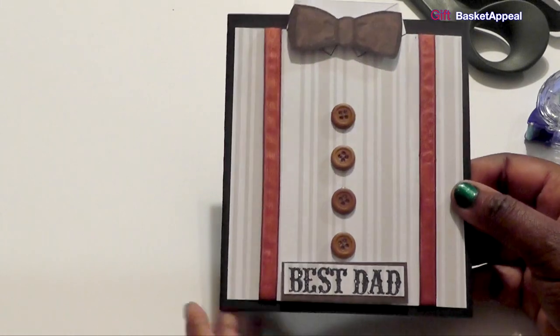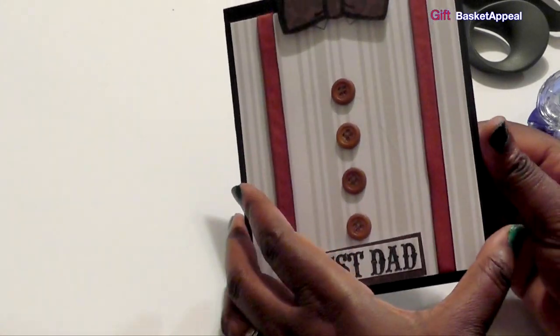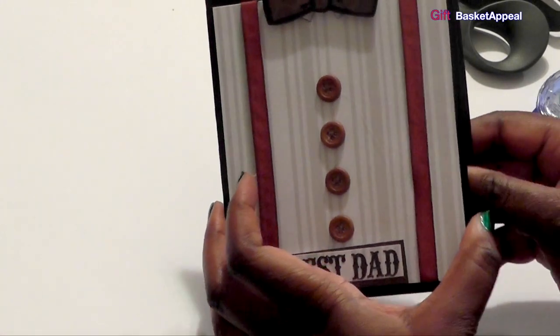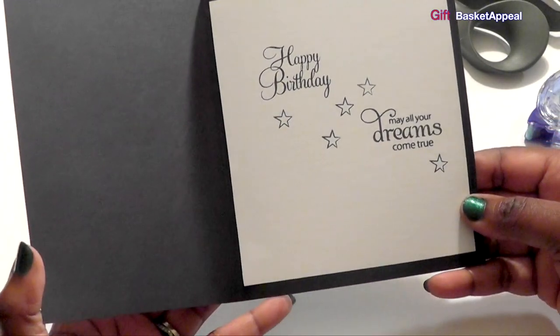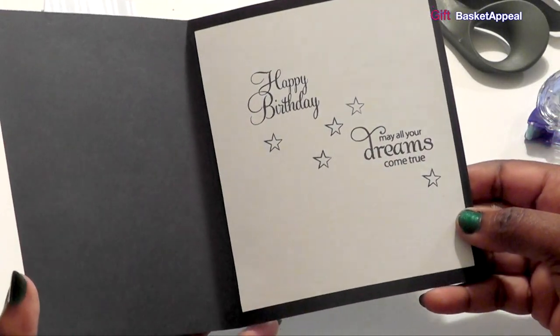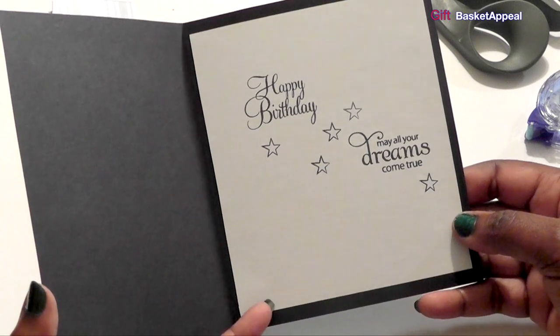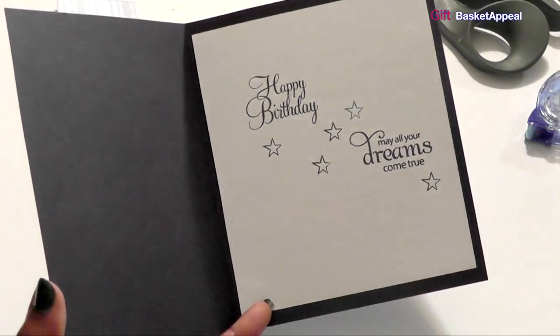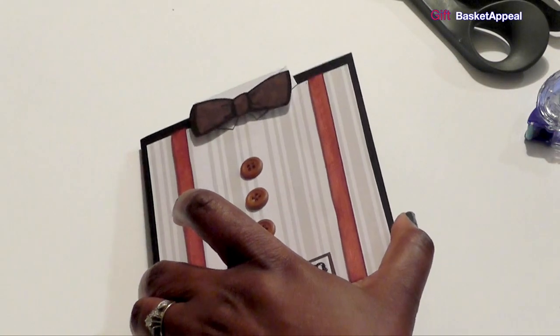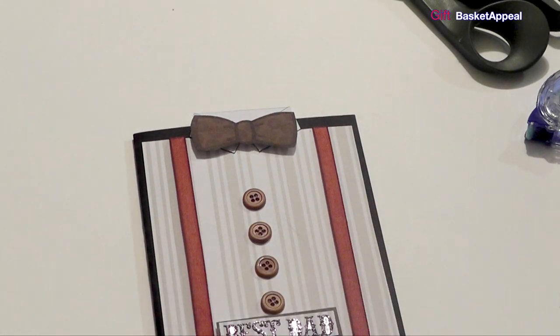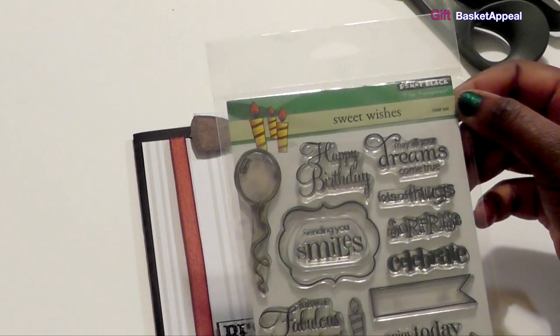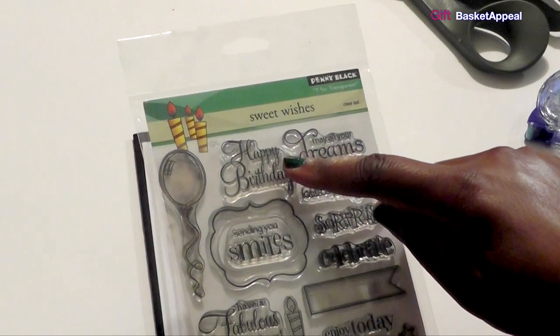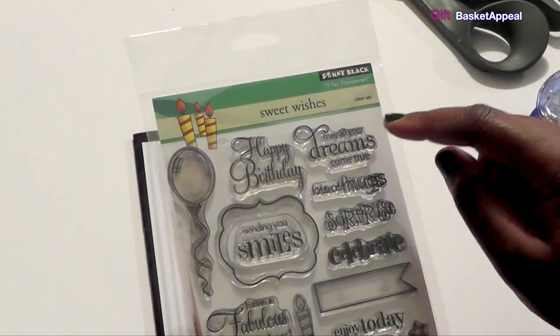And so look how adorable that is and what I did was since I'm going to use this as a birthday card I put my sentiment on the inside but you could easily use this for a Father's Day card and what I did was for my sentiment I used the penny black sweet wishes I used happy birthday and may all your dreams come true so I use those stamps together along with the star.